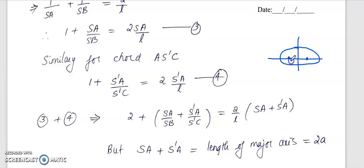If you have S and S' to be the foci and if A is any point, then when you take the sum, SA plus S'A, as shown in the last video, SA plus S'A will be equal to 2a.